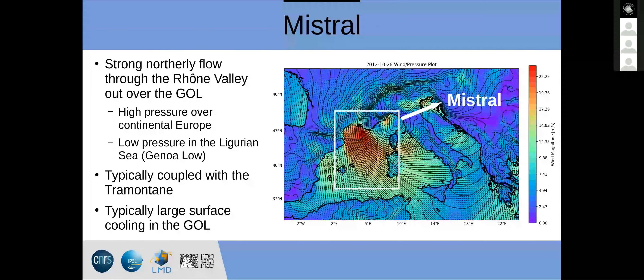Quick review of the mistral: it's a strong northerly flow through the Rhône Valley that flows out over the Gulf of Lyon. It's caused by a high-pressure system over continental Europe with a low in the Ligurian Sea, commonly known as the Genoa low. It's typically coupled with the Tramontane, but doesn't have to be. It's mainly a northerly flow over the Gulf of Lyon, and it's typically a cooler air mass, so it tends to cool the surface.